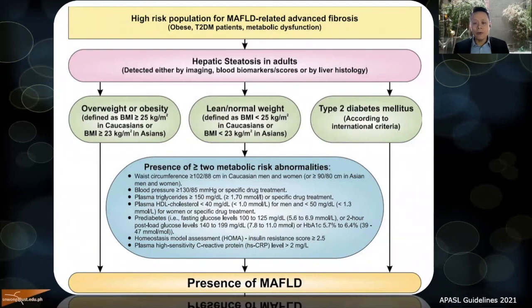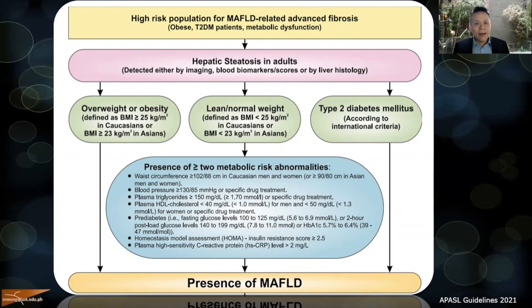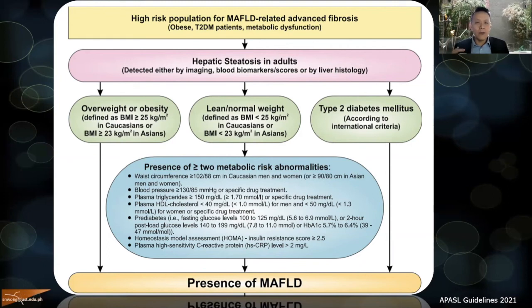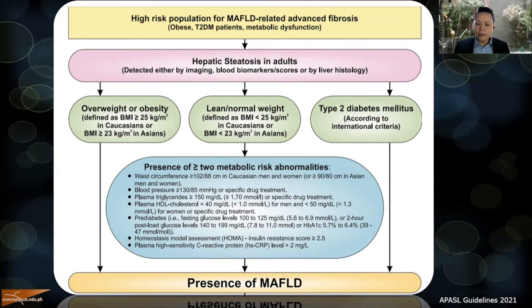The APASL guidelines outline how to deal with patients with MAFLD. If a patient has risk factors for fatty liver — obesity, type 2 diabetes, or metabolic derangements — screen for fatty liver through ultrasound or the Fatty Liver Index. If fatty liver is confirmed, assess BMI. If the patient is overweight, obese, or diabetic, you clinch the diagnosis of MAFLD. If not, you still need to check waist circumference, triglycerides, and HDL to find metabolic risk.